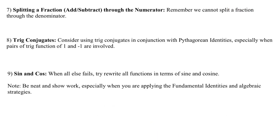Strategy number seven is called splitting through the numerator. I'm going to explain this through a numerical example. Let's say that I had something like three plus two divided by seven, this could be written as three divided by seven plus two divided by seven. We would call that splitting through the numerator. It's whenever we have addition or subtraction going on in the numerator.